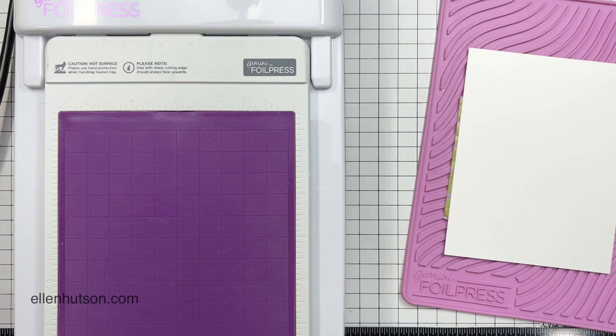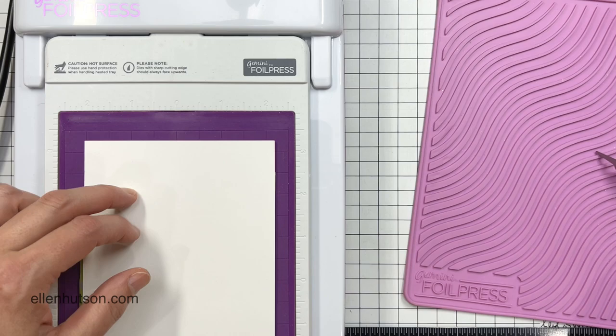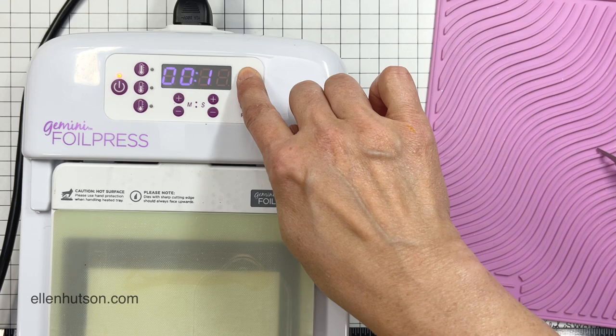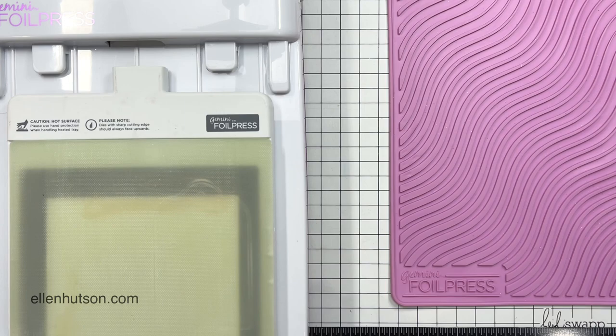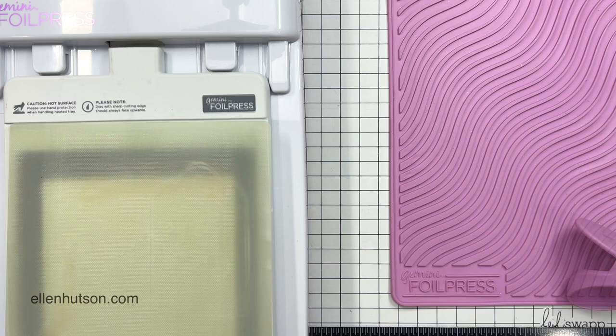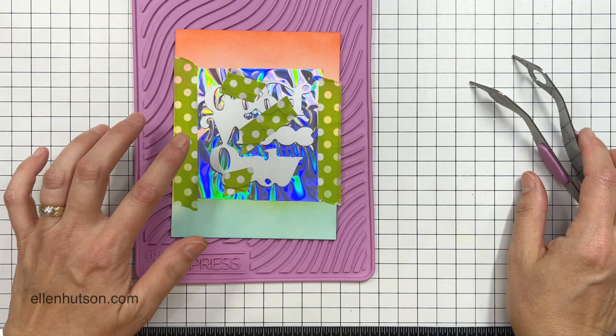I'm going to wait until that light turns green and it beeps at me. Then I'm ready to take my project. Notice I flipped it over so that the hot foil stamp is getting placed directly onto the heating element. Then I'm going to put my top plate on, hit the start button, and wait until it beeps at me. Then I'm going to take that off the platform and send it through my Gemini die cutting machine.